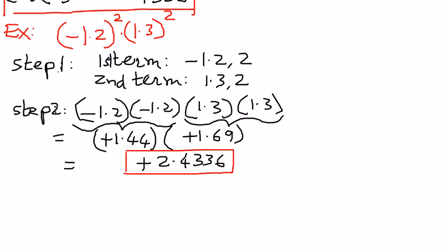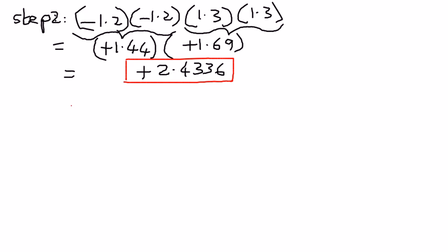So negative 1.2 raised to the power of 2 times 1.3 raised to the power of 2 — the answer came out as a positive 2.4336. That is our answer. So let us take one more example and apply these same concepts.